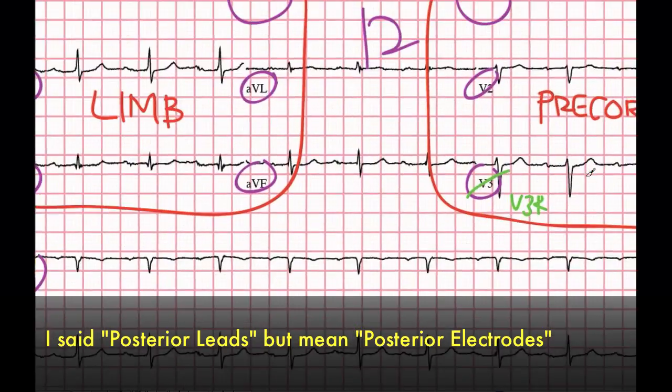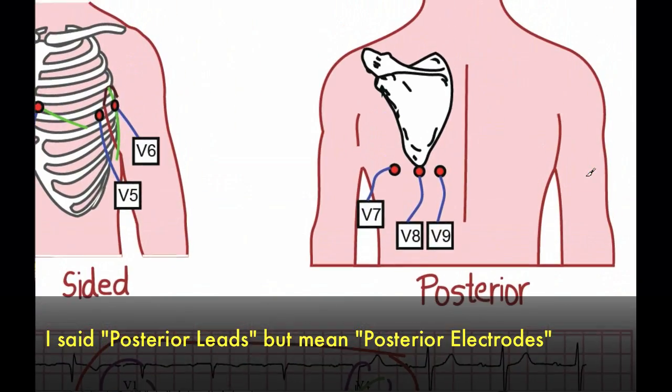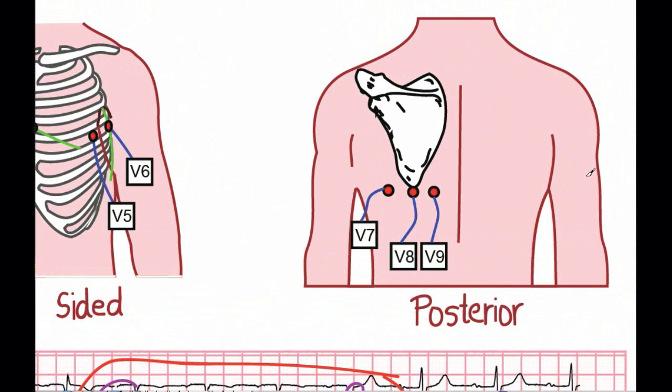Now let's look at the posterior leads. Posterior electrodes wrap around the back, continuing where V6 left off. These are used in diagnosing posterior MIs. Place V7 in line with V6, but along the posterior axillary line. V8 is in the same horizontal line, but this time at the tip of the scapula. And V9 is in the same horizontal line, but just to the left of the spine.